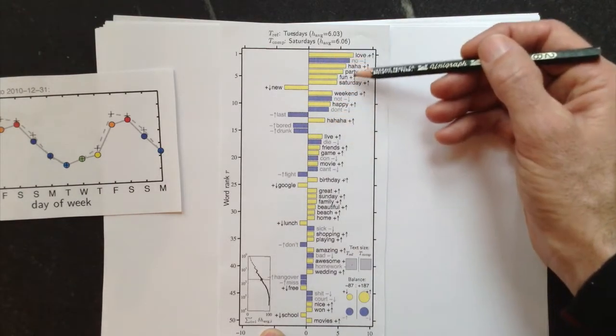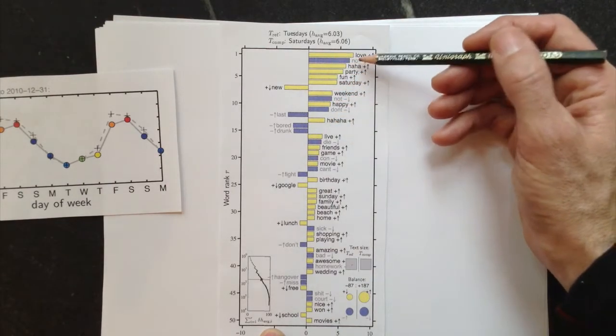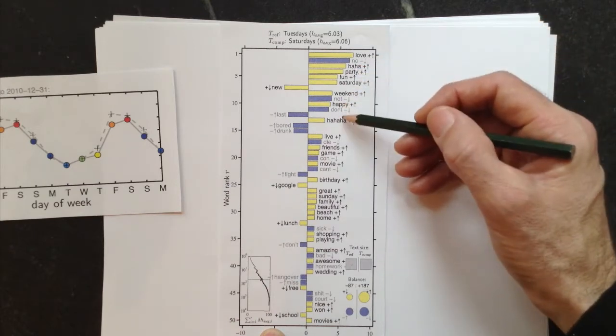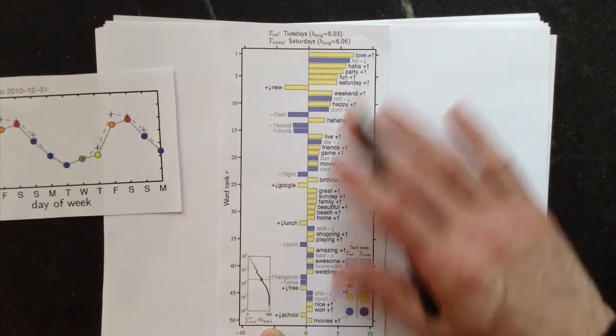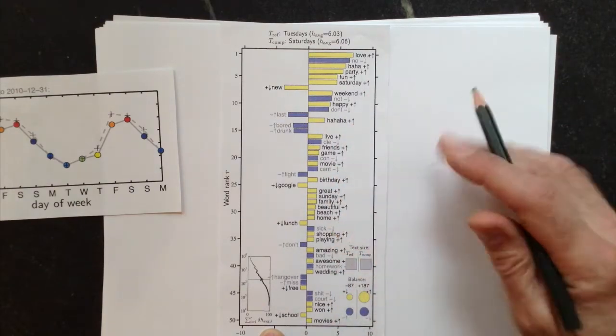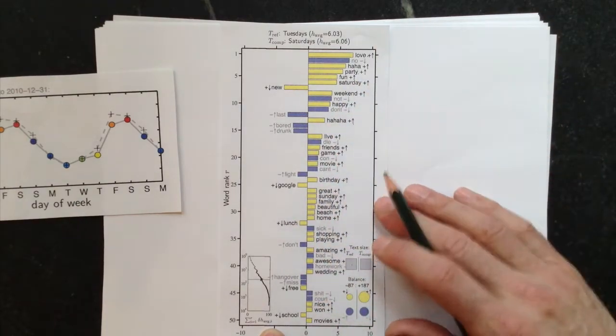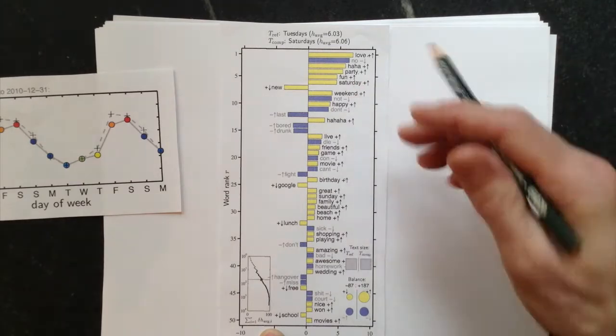Blue, so these are sad words, relatively negative words that are being used less. And there's no and not and don't and die, and sick is down here, bad and homework. So some of these words are complicated, sick can mean positive things, but overall it's a coarse measure, but overall it does a pretty good job.